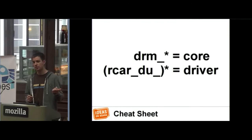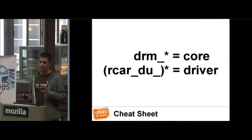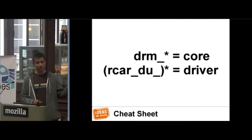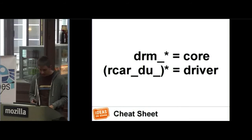Every function and structure that starts with DRM underscore is part of the DRM core — not part of the driver. I took one driver as an example here. Every function and structure that will start with rcar-du or that doesn't have a DRM prefix is going to be part of the driver. Let's dive directly into that.